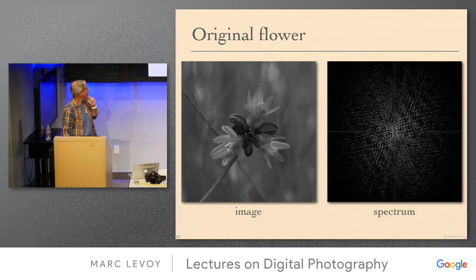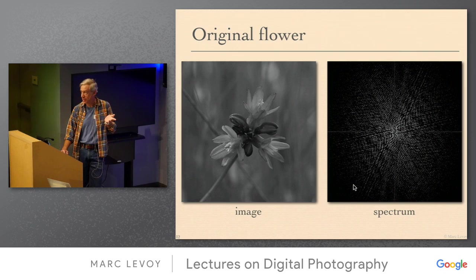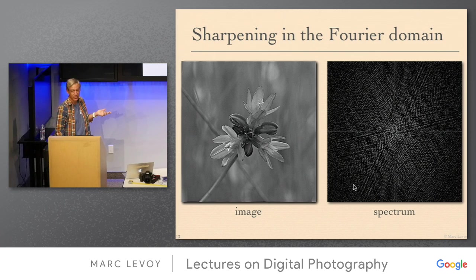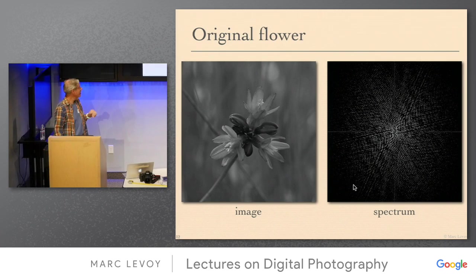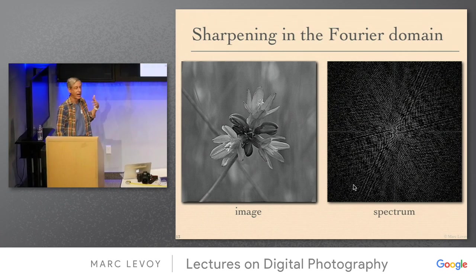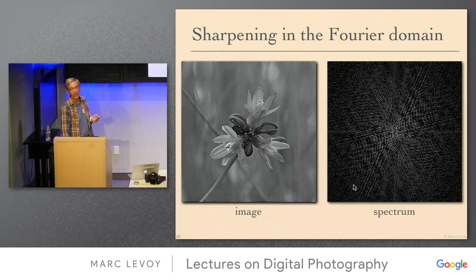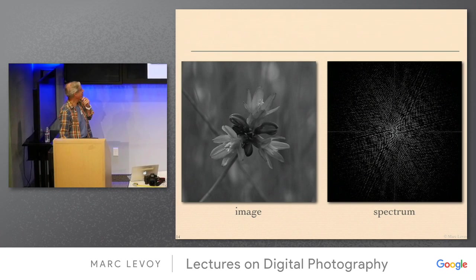Suppose we erase the outer part of the spectrum — those are the high frequencies. That's what we get — I computed these using MATLAB just by erasing the outer part of the spectrum. If instead we increase the contrast of the pixels around the edge in the spectrum and convert back, that sharpens the image, as you'd expect — we're increasing the amplitude of the high frequencies.